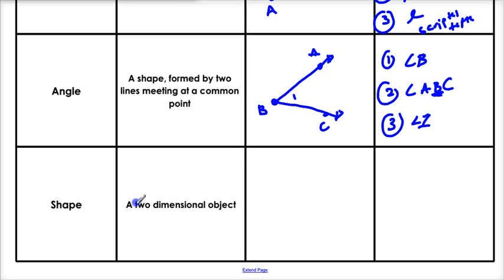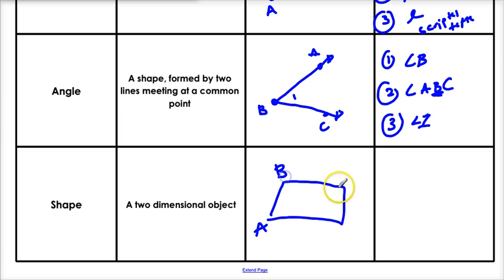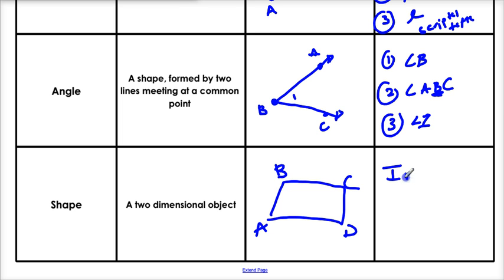The last one: a shape. A shape is a two-dimensional object with connected sides. Like, look at this thing — this is a shape: A, B, C, D. Now, the one rule to naming a shape is that you use all the vertex angles — A, B, C, and D — and they have to go in the order that they appear, so A, B, C, D. It has to go in clockwise order.